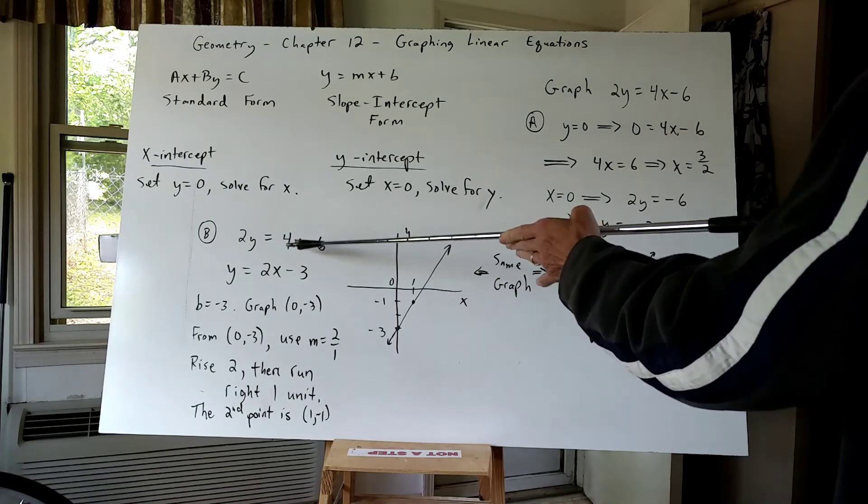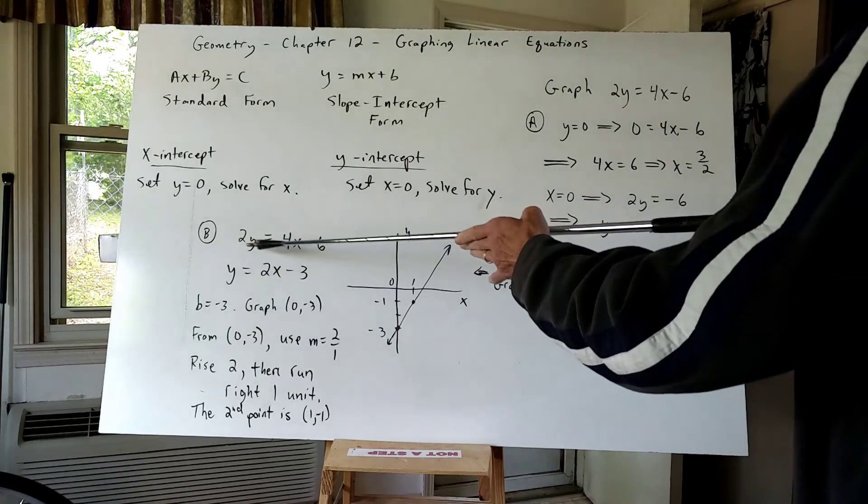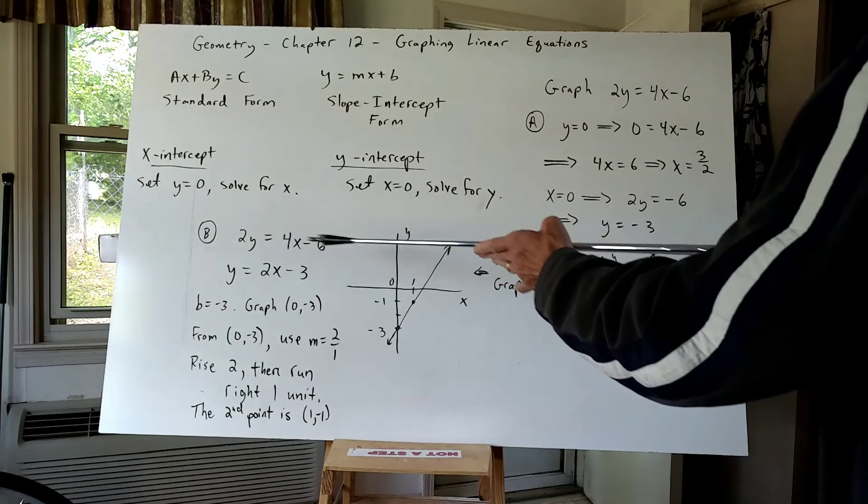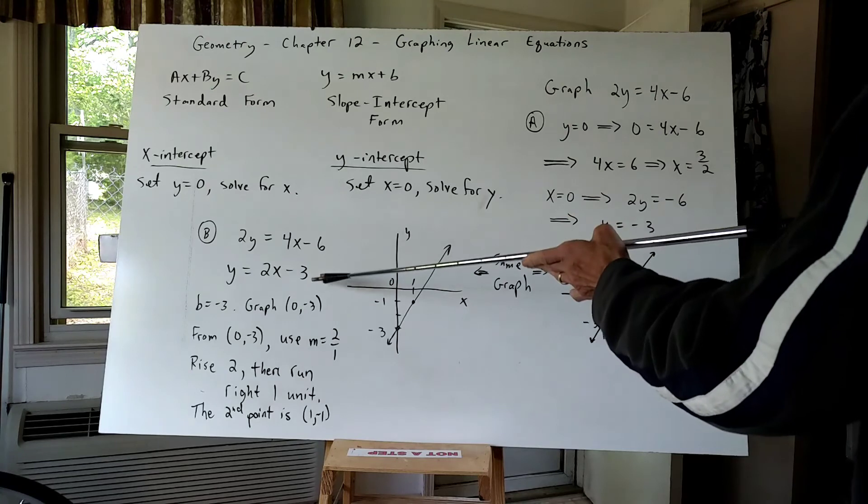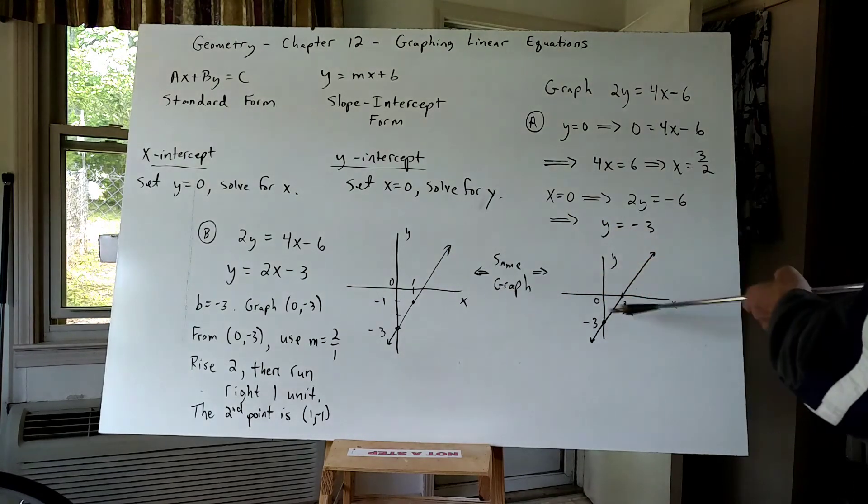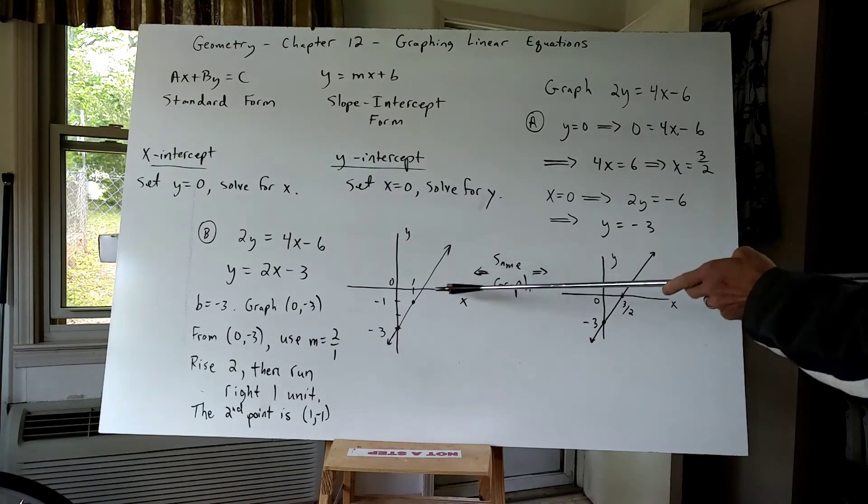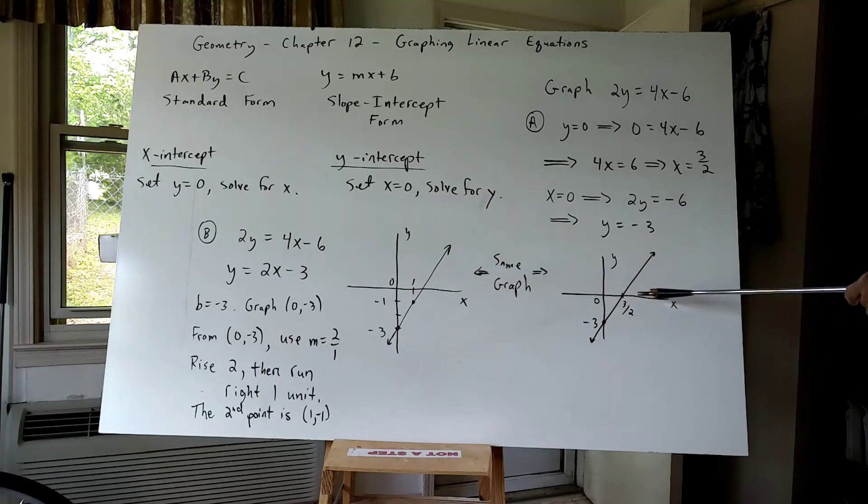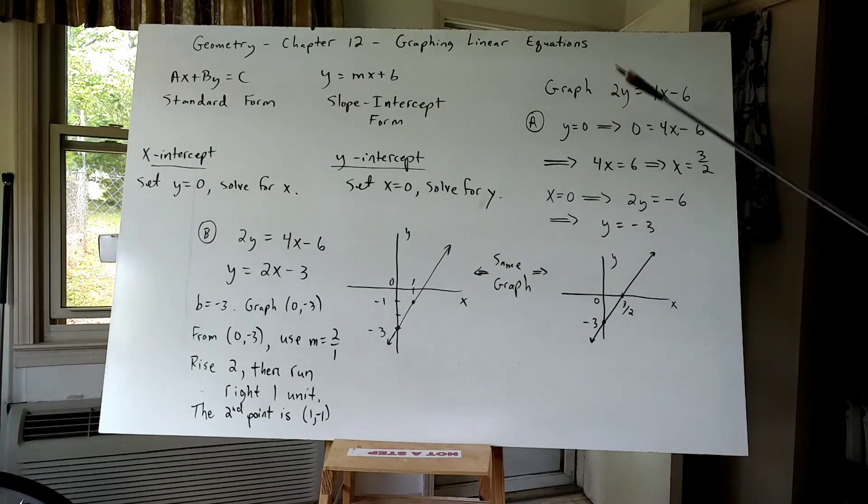I could have done that here. I could have put one in. Four times one is four. Four minus six is negative two. And two times negative one is negative two. So again, the point one negative one makes the original equation true. It makes the slope intercept form equation true. These are the same graphs. If you take a look, this line would continue on up and cross to the X axis at the point three halves or one and a half. Same line because essentially it was the same equation. We just approached graphing it two different ways.